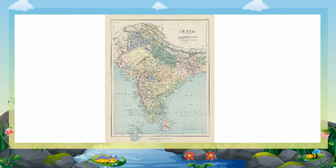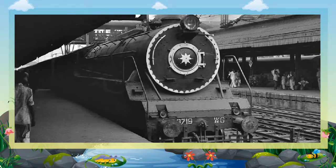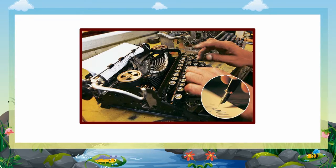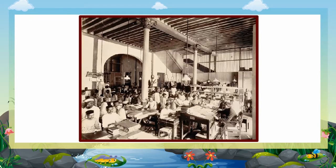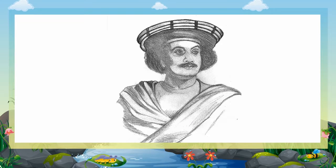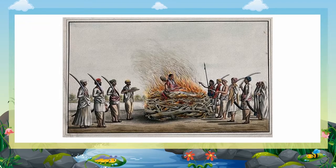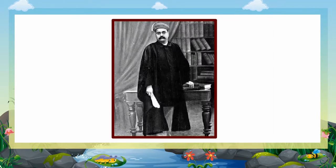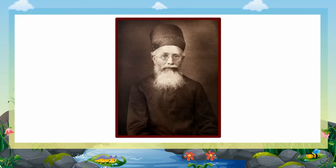After the revolt of 1857, the whole of India came under one rule. Railways, posts, and telegraph services were started. Educated people got employment. Some educated people were pained to see the miserable conditions of India and began to dream of its independence. Among such thinkers was Raja Ram Mohan Roy, who worked hard to abolish the sati pratha and supported the marriage of widows. Gopal Krishna Gokhale founded the Bharat Sevak Samaj and asked young men to get modern education and serve the country.